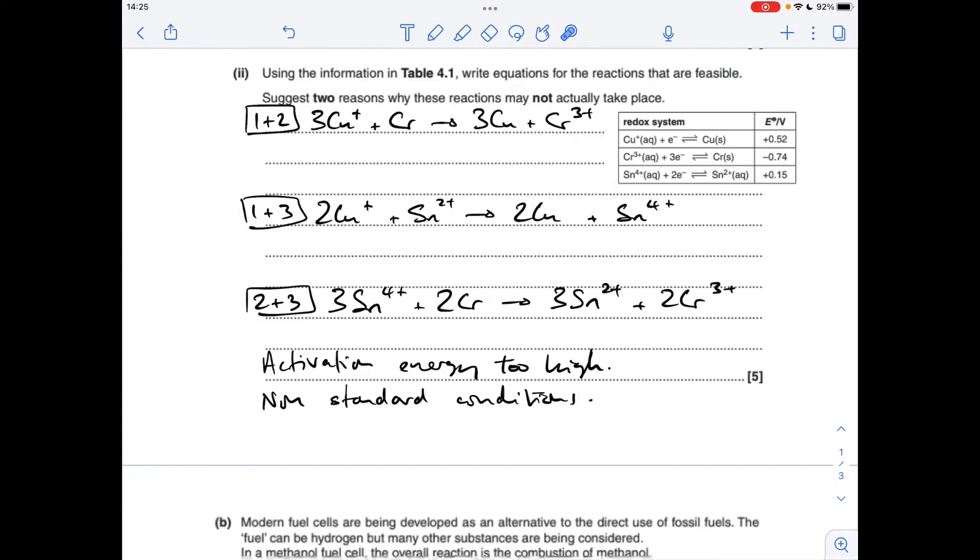And the other pair of reactions are two and three. So again, looking at the two electrode potential values, this one's the more positive one, so this is going to run forwards, this is going to run in reverse. And we're going to need to multiply this one by two to get the electrons to six, and this one by three to get the electrons to six, which gives us this equation here.